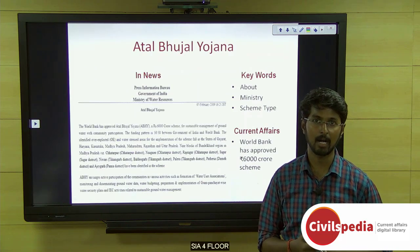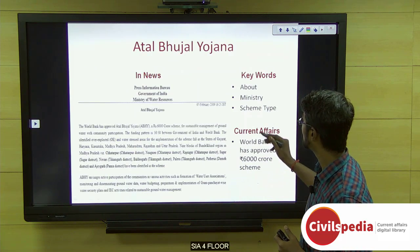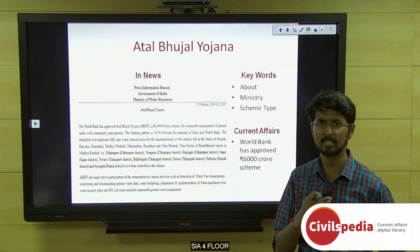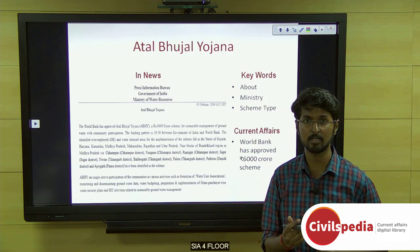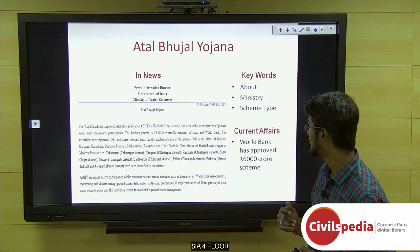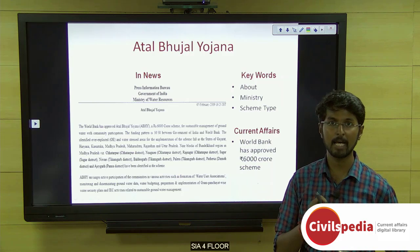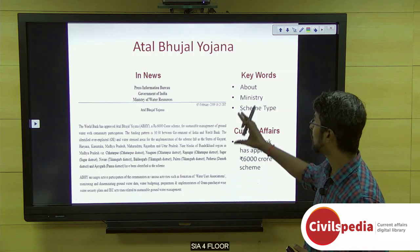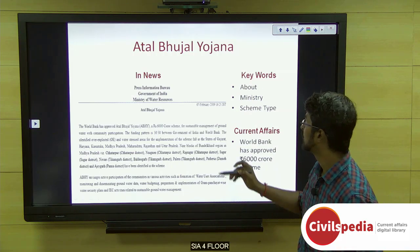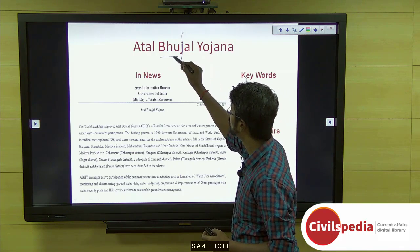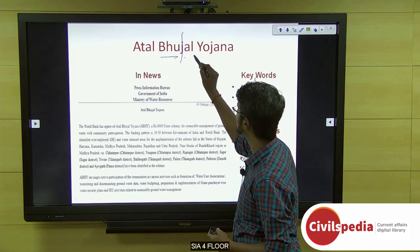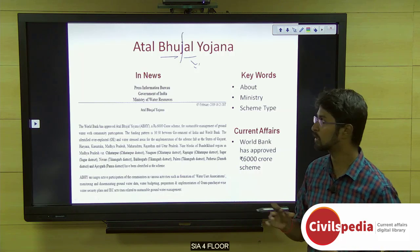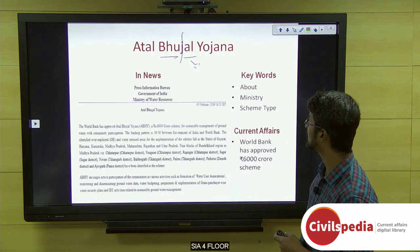Let's move on to the next topic: Atal Bhujal Yojana. You need to know which ministry implements this scheme, whether it is a central sector scheme or centrally sponsored scheme, and the current affairs — that the World Bank has approved this particular 6,000 crore project. Split the name: 'Bhu' means Bhumi or Earth, and 'Jal' means water — so it pertains to groundwater management.